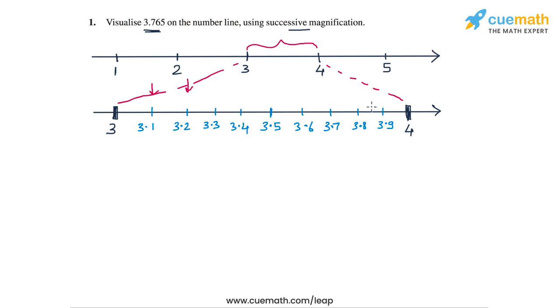Next, because 3.765 lies between 3.7 and 3.8, let's focus on the interval from 3.7 to 3.8. Let's magnify this interval again.